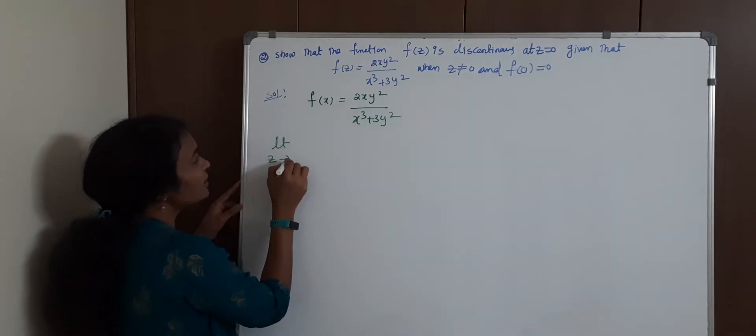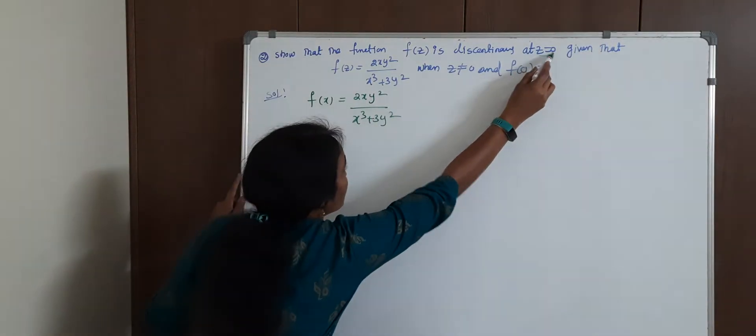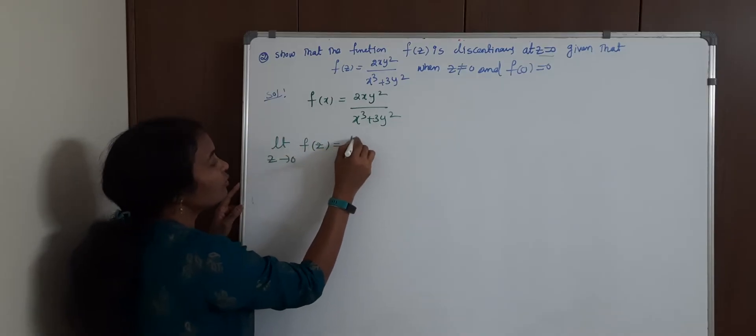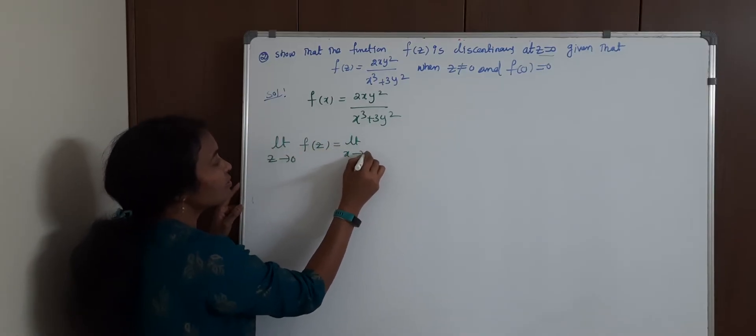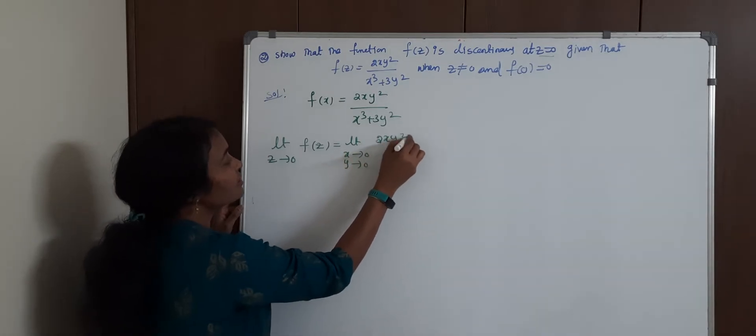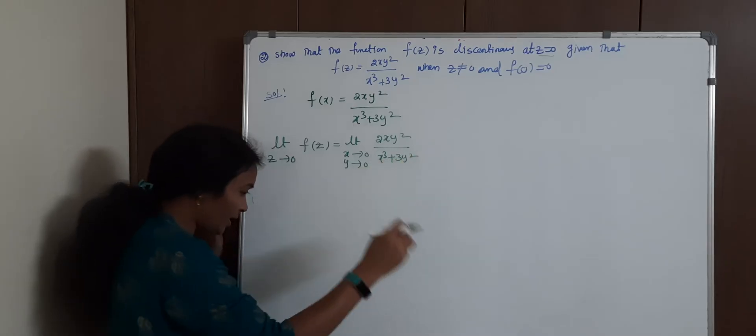What you have to do? Limit z tends to 0, we need to find out if this is continuous. Z tends to 0 means limit z→0, f(z) equals limit x→0, y→0, 2xy² / (x³ + 3y²).